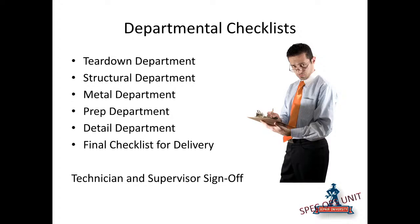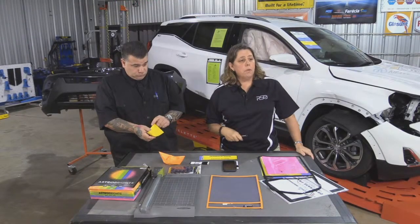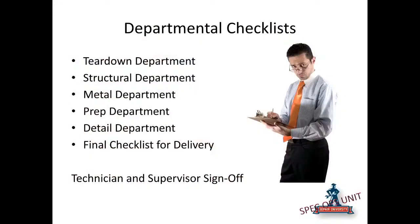By having it on an Excel spreadsheet, as you and your team — your technicians and estimators — all work together, you can constantly evolve this document to make sure it's fit and working for you. We're going to start by going over what we call our departmental checklist. This means that everything in the shop moves through a QC process by department when the vehicle moves to the next department — we're always checking off on each other, a peer-to-peer review. I've got my tear-down/blueprint department, my structural department, metal department, prep department, refinish, detail, and then a final checklist for delivery.